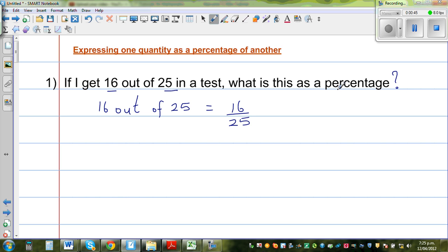Now if you want to write as a percent, you will have to write this out of 100. So 16 out of 25, I want to write some number out of 100. This is what percent means. Per cent is per 100. Cent is 100. Per cent is 100.